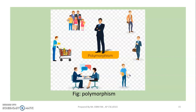Consider two numbers: 1 plus 2. The answer is 3. Now, if we have a string — suppose AB plus CD — then AB is a string and CD is a string. The result is ABCD, because the plus symbol here is not performing addition. It is concatenating the strings.